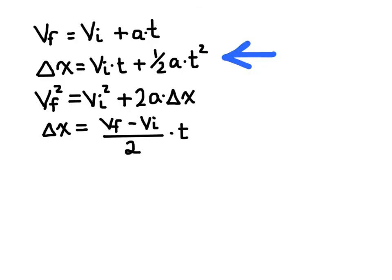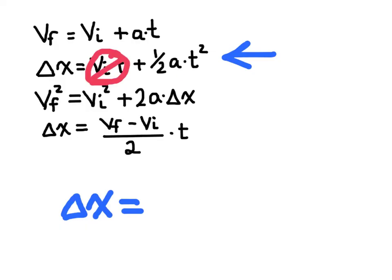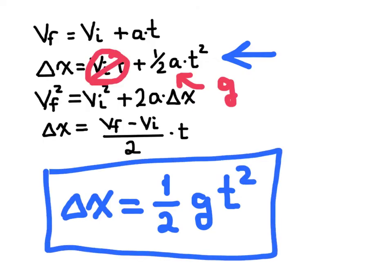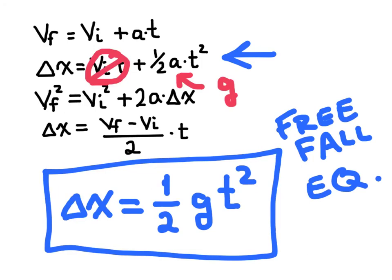Using the second equation of motion, we can rearrange it. The initial velocity when standing on top of a cliff is zero, so that term drops out. The acceleration is the acceleration due to gravity, so we replace the symbol a with g. This gives us the free fall equation: Δx = ½gt².